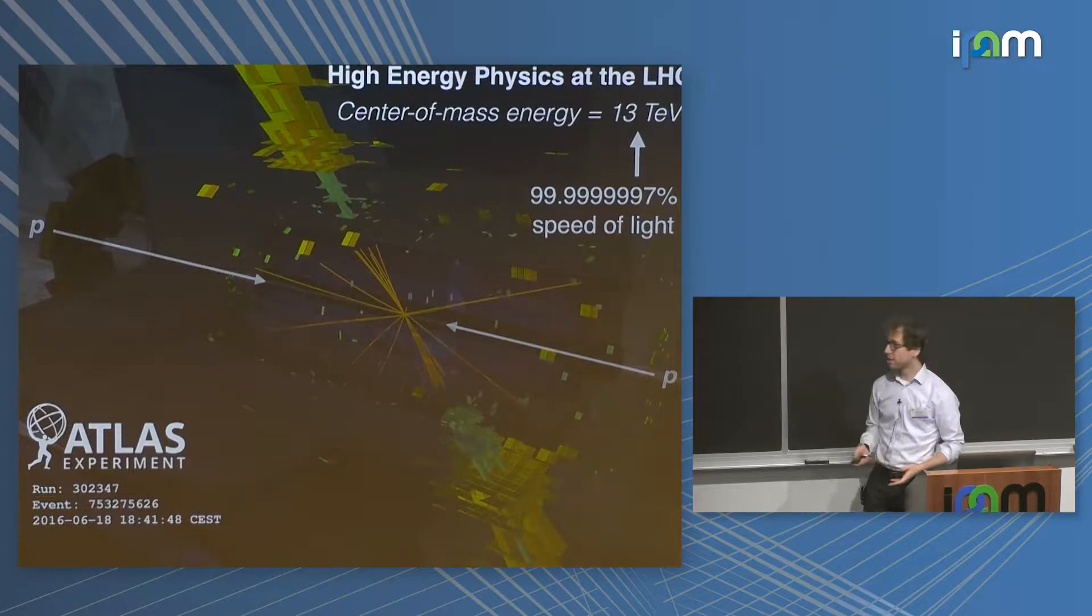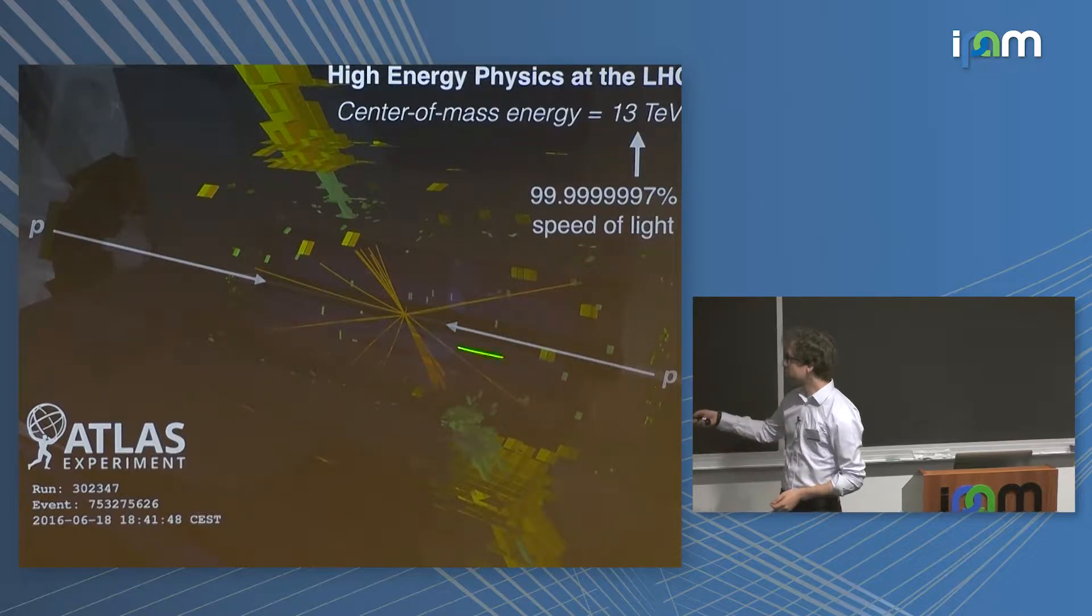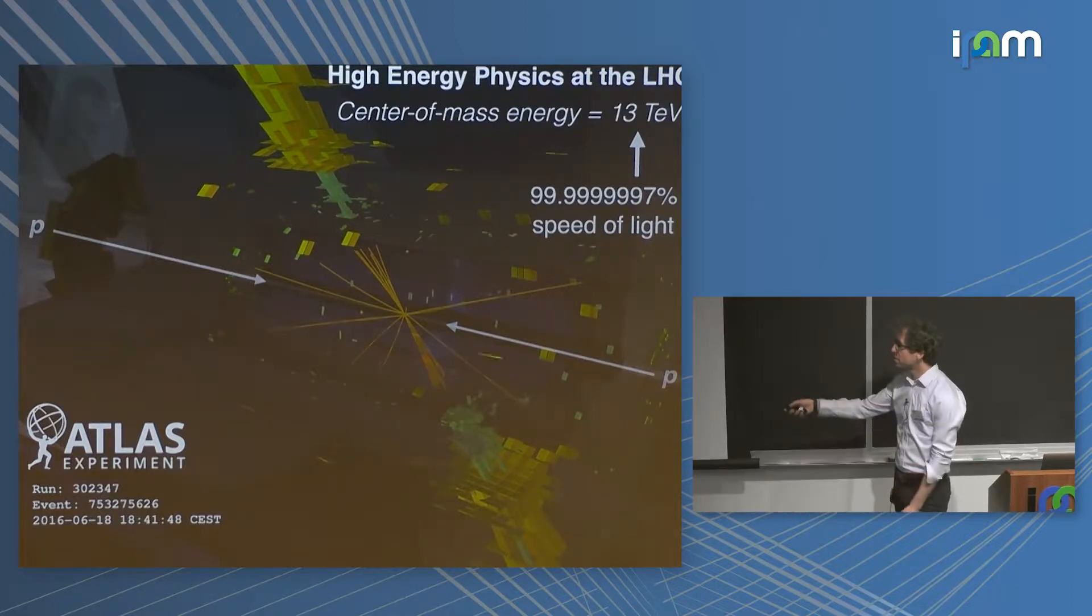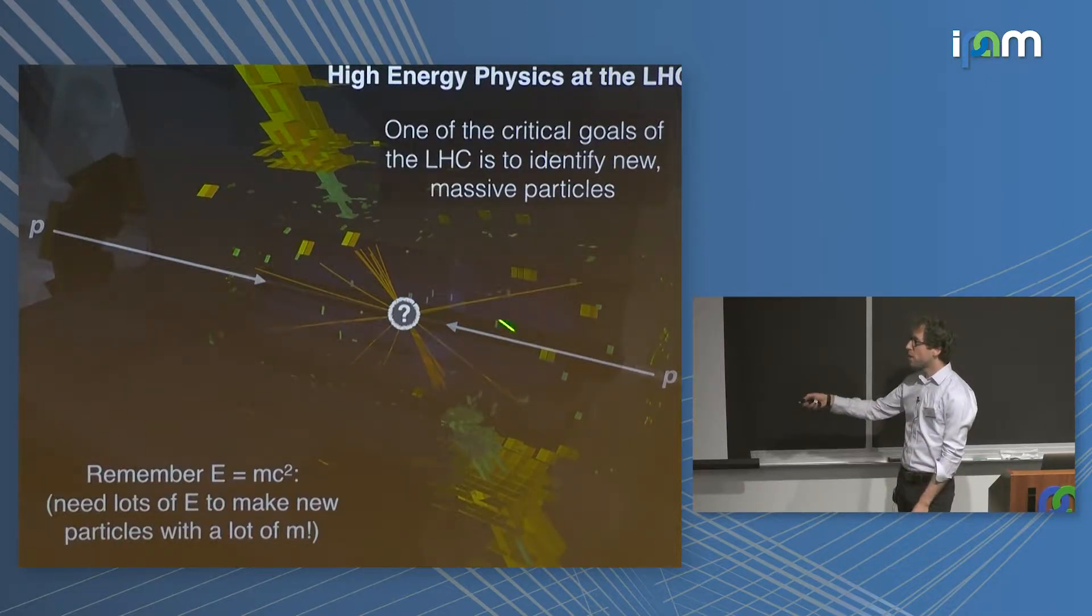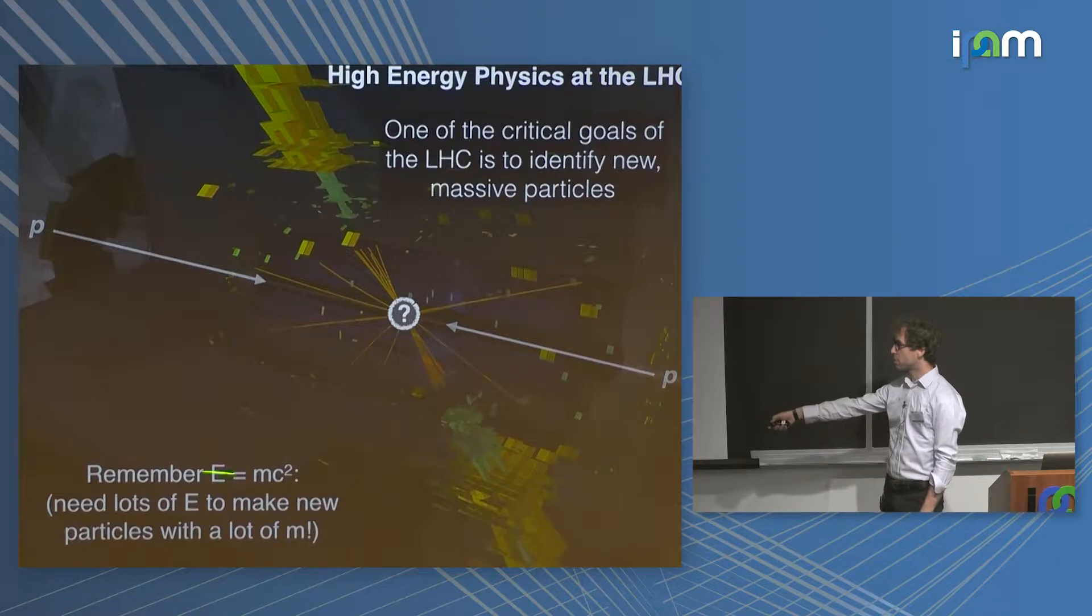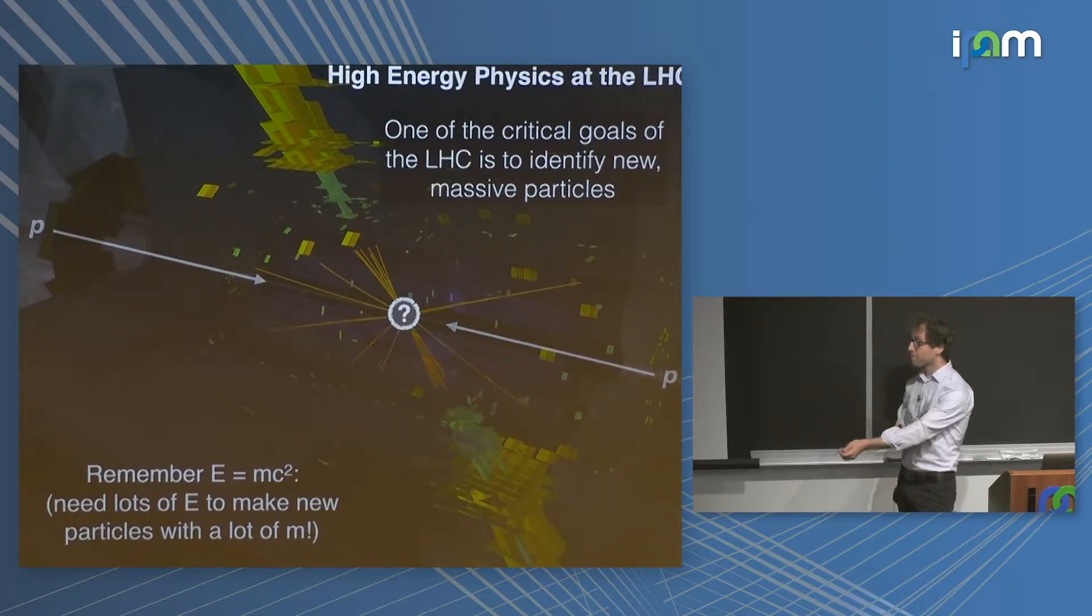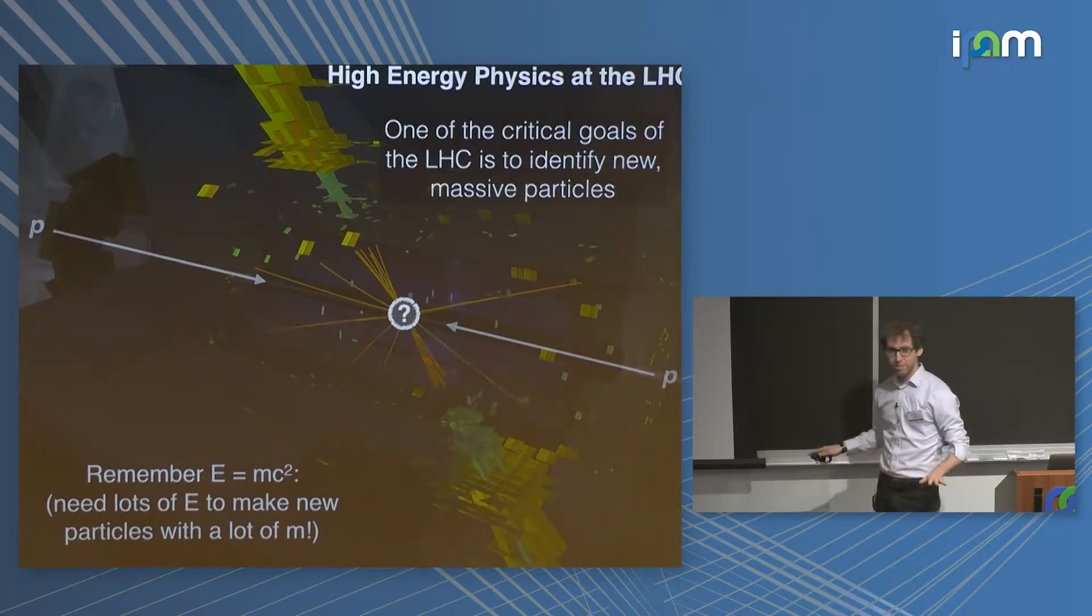Here's a view of what a collision might look like. So we collide protons in the Large Hadron Collider. Protons come in from left to right, traveling at basically the speed of light, and they collide and out goes some collision debris. These lines and blobs here are reconstructed trajectories of charged and neutral particles. One of the fundamental goals of the LHC is to identify new high-mass objects that might be produced in this collision. If you want to make something that's very massive, you have to pump in a lot of energy.